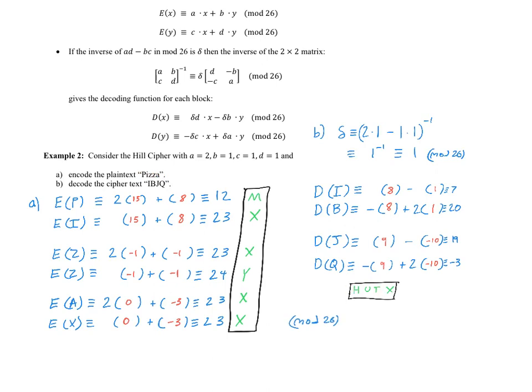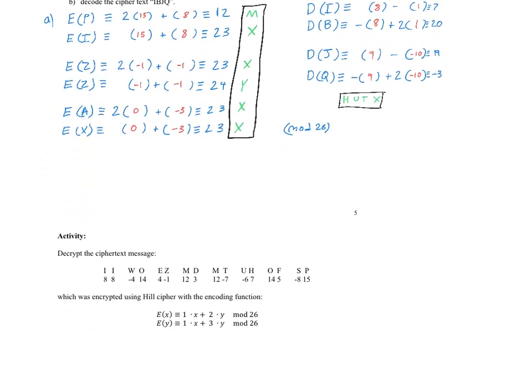So now it's time for you to try the Hill Cipher on your own. So here's an activity. We have eight blocks to try to do some decoding. We're given the encoding function. So I want you to try to find the corresponding decoding function and decode this message.